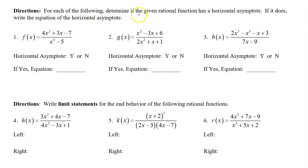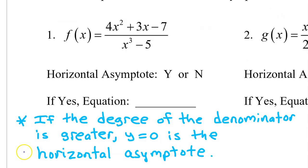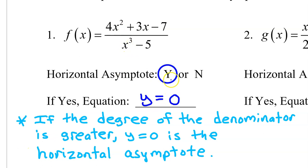For each of the following, determine if the given rational function has a horizontal asymptote. If it does, write the equation of the horizontal asymptote. In previous videos, we learned that if the degree of the denominator is greater, then y equals 0 is the horizontal asymptote, and that's the situation we see right here. So yes, there is a horizontal asymptote, and the equation is y equals 0.